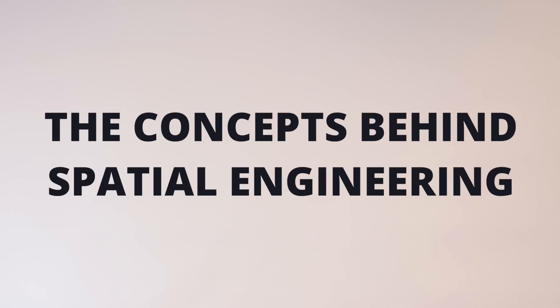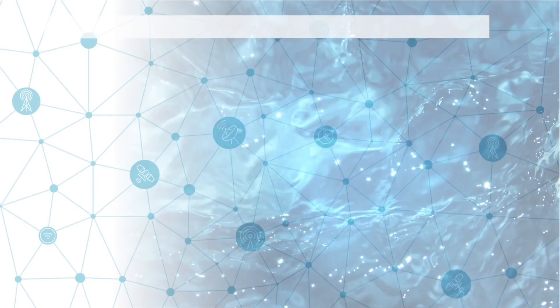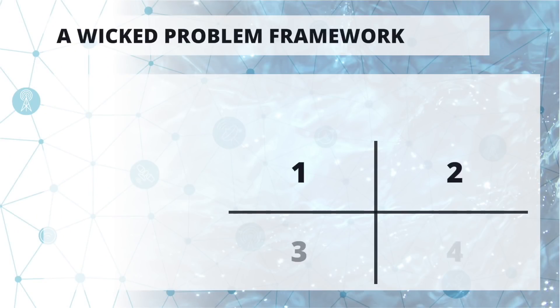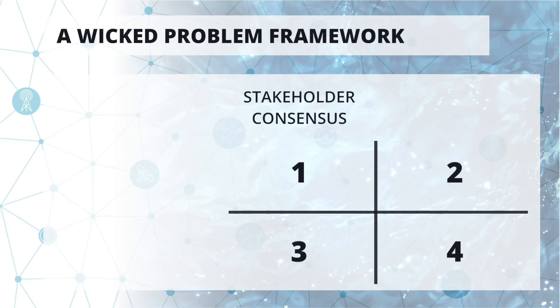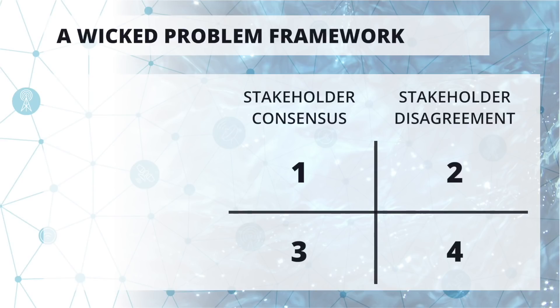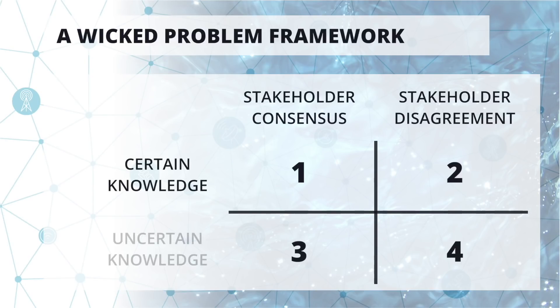The concepts behind Spatial Engineering are defined in wickedness. Wickedness is a way to describe these broad, difficult problems in the world. It can be seen as a quadrant in which you compare to what level stakeholder groups agree or disagree with each other, and what kind of knowledge we have on the problem itself. That leads to four quadrants ranging from very wicked to a more tame problem.